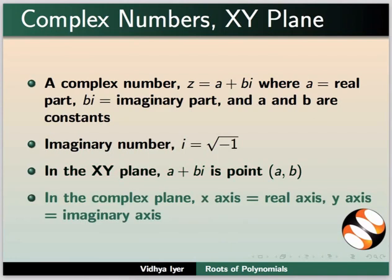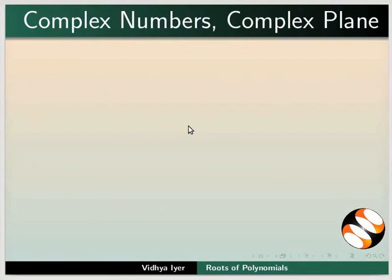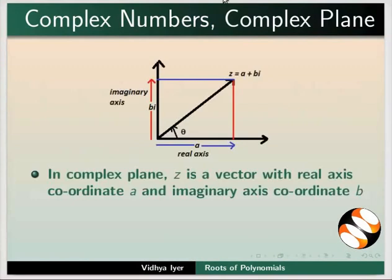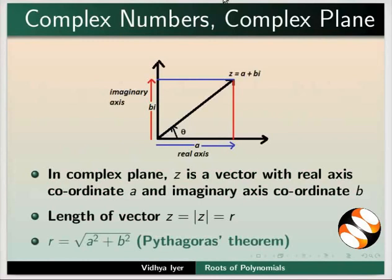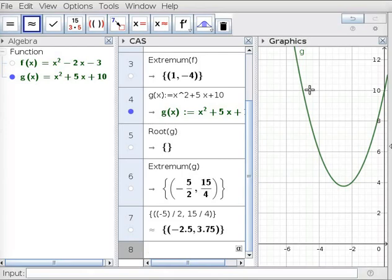In the complex plane, x-axis is called real axis and y-axis is called imaginary axis. In complex plane, z is a vector with real axis coordinate a and imaginary axis coordinate b. The length of vector z equals the absolute value of z and equals r. According to Pythagoras theorem, r equals square root of a² plus b².